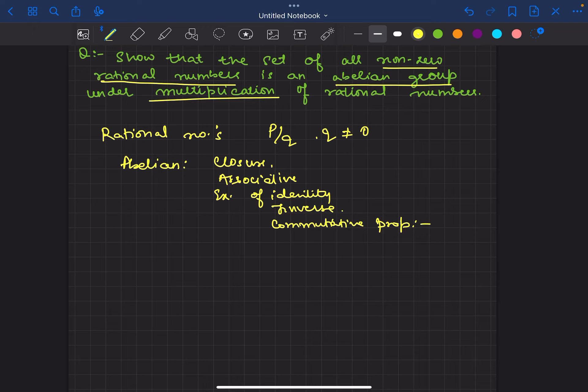This is our set. We need to satisfy our set. Let Q* be the set of all non-zero rational numbers. First, this is rational numbers, but here we have not included 0.